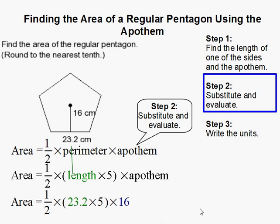Now we substitute. We do 23.2 here for the length, and 16 for the apothem.